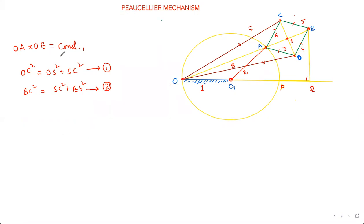So which is greater? OC is greater and BC is smaller. So you have to do one minus two. So I'll do OC² minus BC². SC will get cancelled. OS² minus BS². Now a² minus b², what is the formula? a plus b into a minus b.